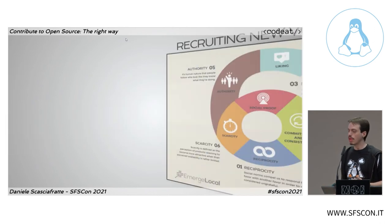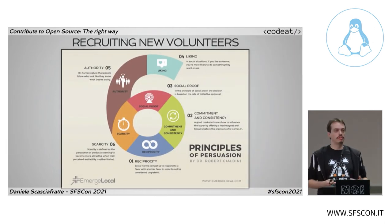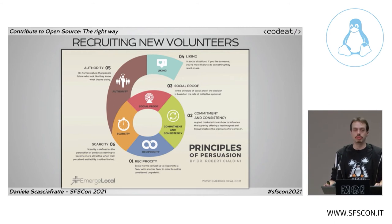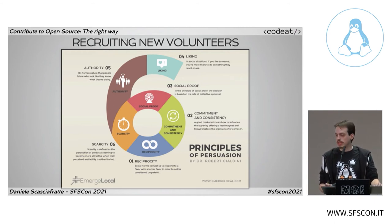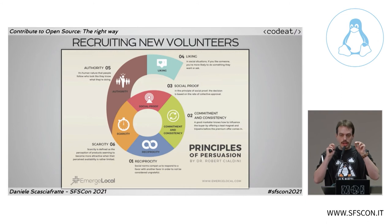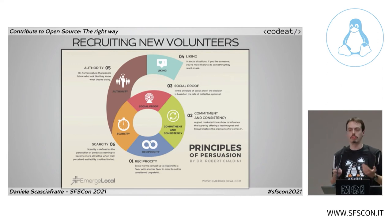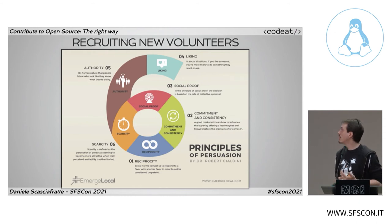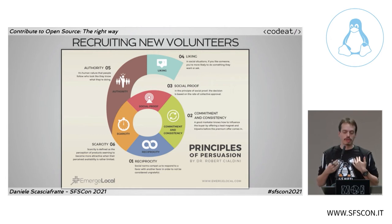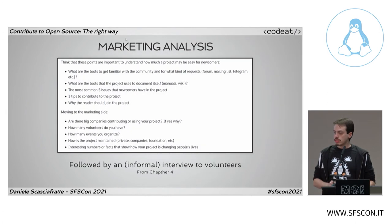Cialdini wrote various books about persuasion. There is a great infographic explaining the various points you can use in your communication to improve and understand the best way to get what you need — for example, to promote the open source project you are developing. The principles are: reciprocity, commitment, social proof, scarcity, authority, and liking. I invite you to check these books because they are very easy to understand even for a developer.